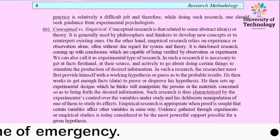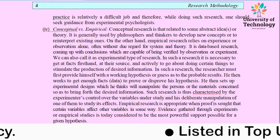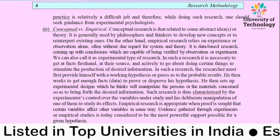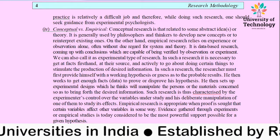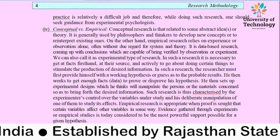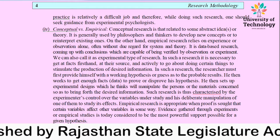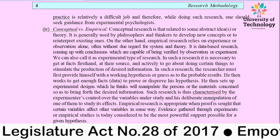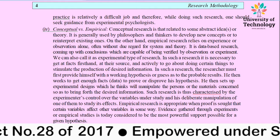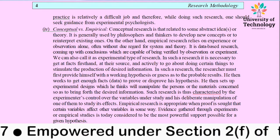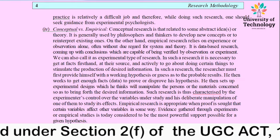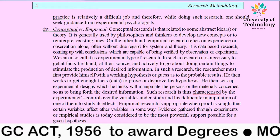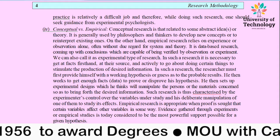It means there is some kind of experiment designed to solve empirical research, and generally it is based on some formula. You have to conduct some experiment and observe it, and here you can manipulate or exercise some control over the variables used in the experiment. This is what empirical research is, whereas where you just develop some concept on existing theory, that is conceptual research.